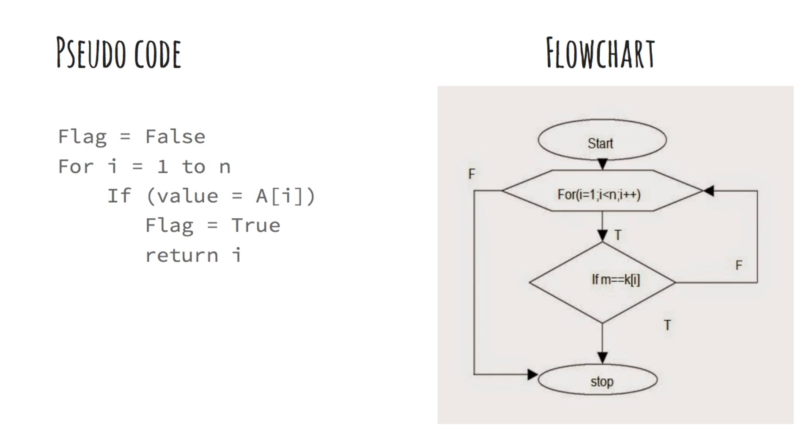Here I have written the pseudocode for a linear search. Value is the item to be searched and a is the data collection of size n. First we initialize a position variable i equal to 1 and a flag equal to false. Then we iterate over the data and check if the ith element is equal to the value. If yes, we set the flag equal to true and return the location. Otherwise we increment i by 1. If we reach the end of data and the flag is false, we print a message value not found.